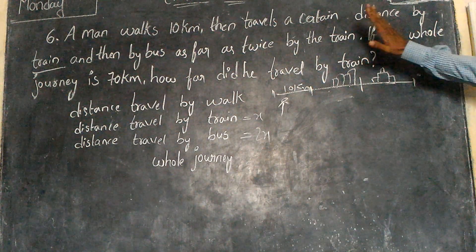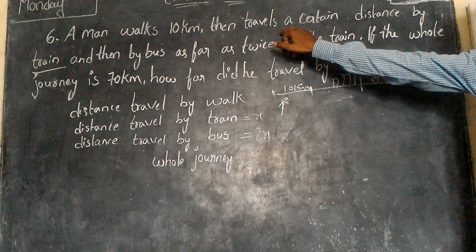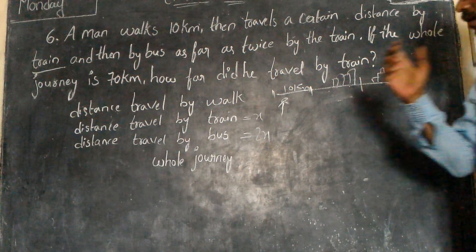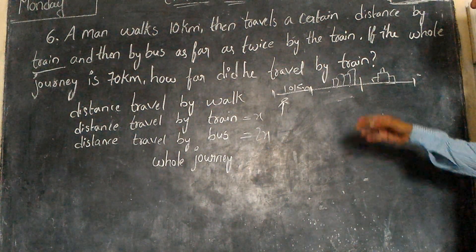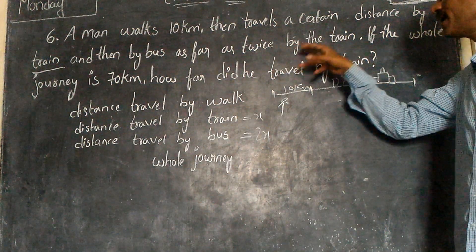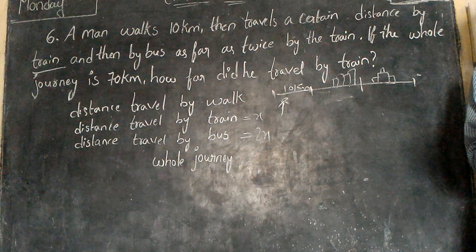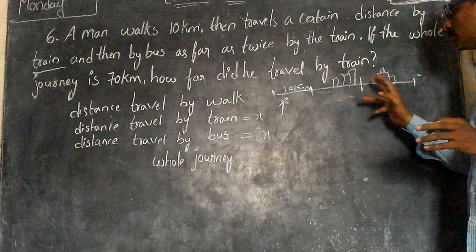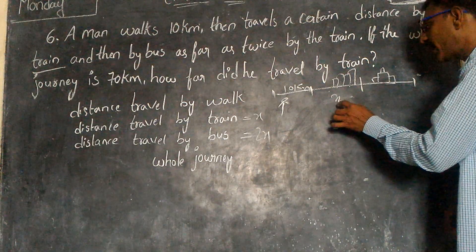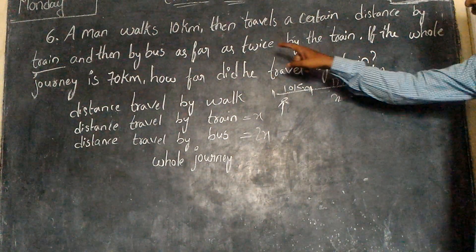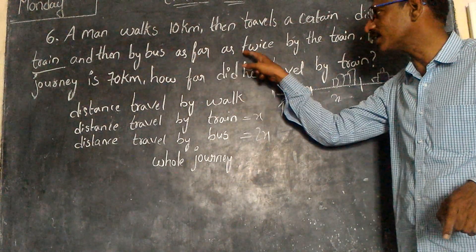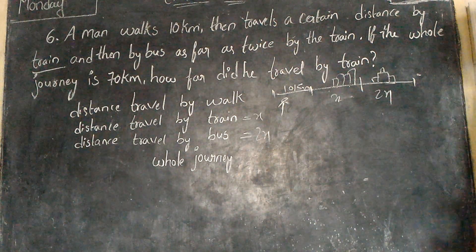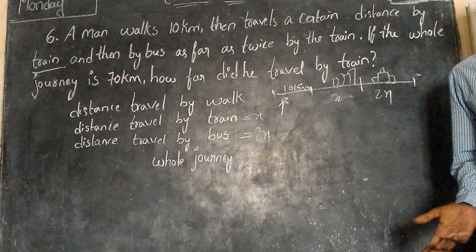Here one clue is given: the bus travels as far as twice the train journey. That means if the train journey is x, then the bus journey must be 2x. The bus journey is twice the train journey — that is the reason. So train journey is x and bus journey is 2x.